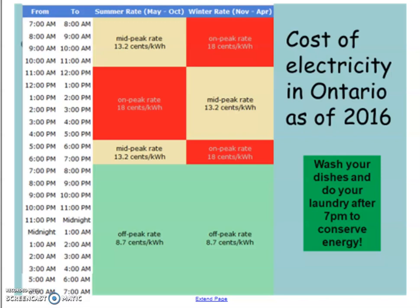So actually, especially now during the COVID-19 closures, they've been trying to advocate to change the cost. Because if you take a look here, the summer rate during the daytime is the on-peak rate. So you'll notice that it's color coded. So we have red, beigey, yellow, and then green.